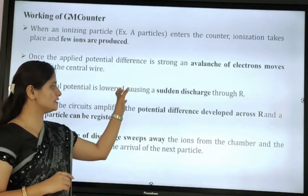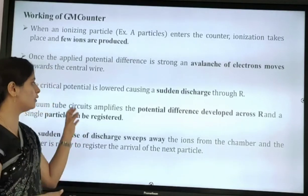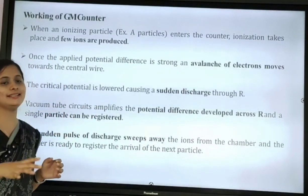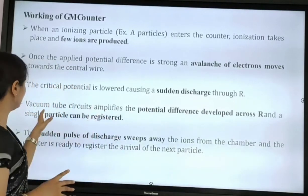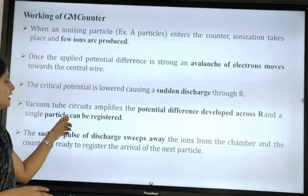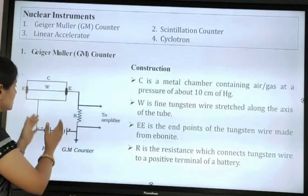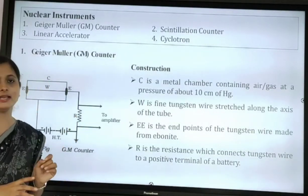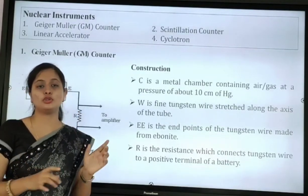Third, the critical potential is lowered, causing a sudden discharge through resistance R. Fourth, the vacuum tube circuit amplifies the potential difference developed across R, and a single particle can be registered — meaning its radiation is counted by the GM counter.